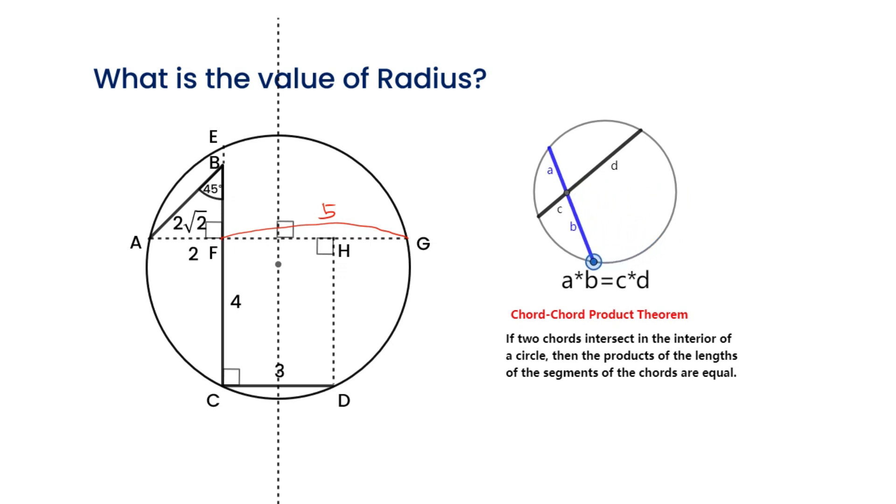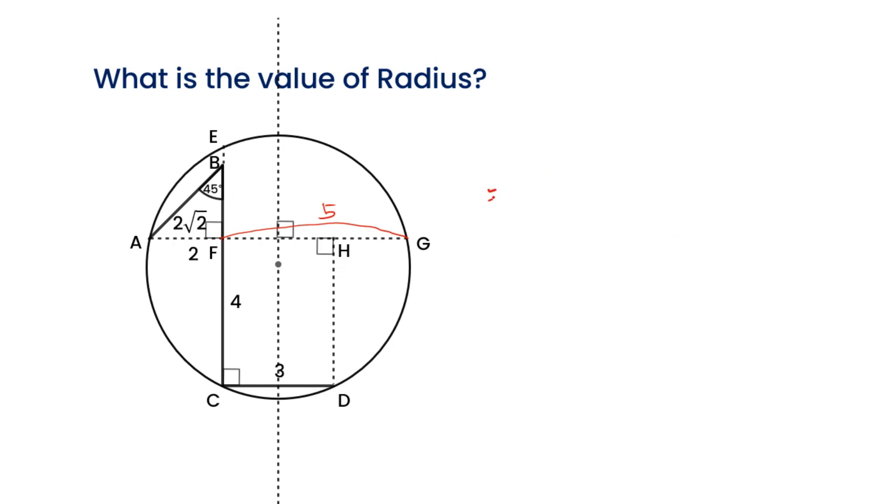From the chord's product theorem, we can get the equation of EF. EF is equal to 2.5. So we get EC equal to 6.5.